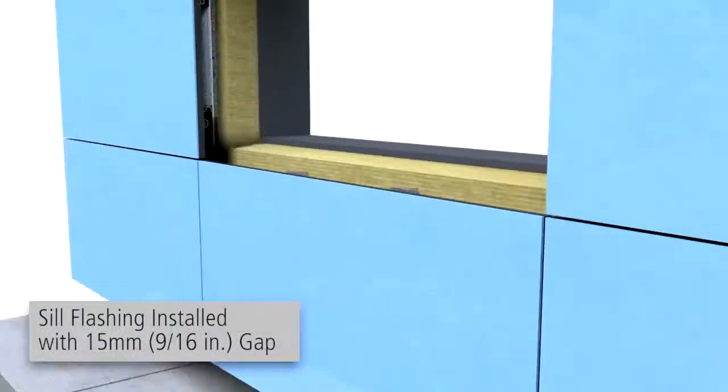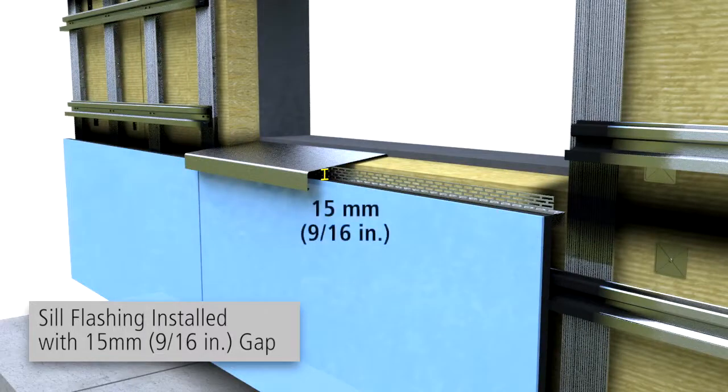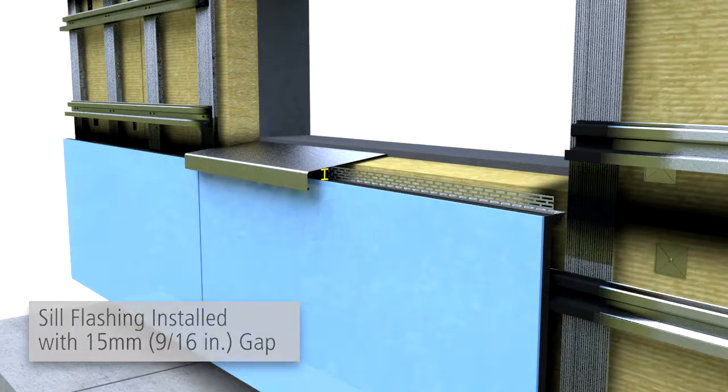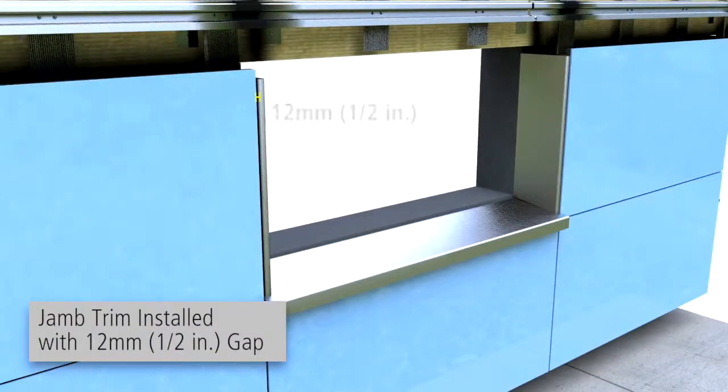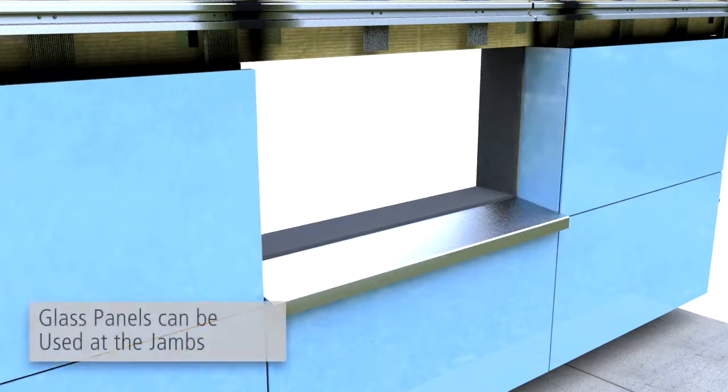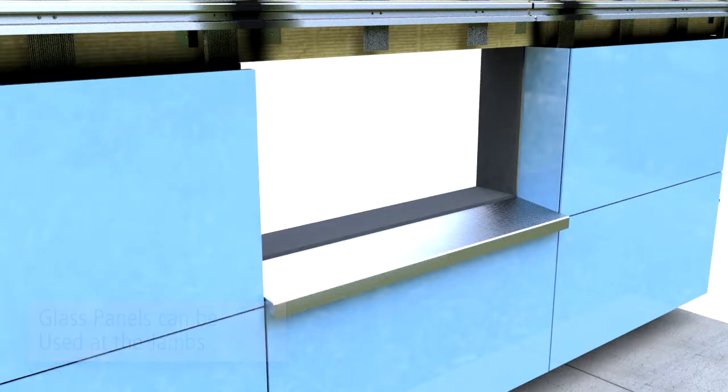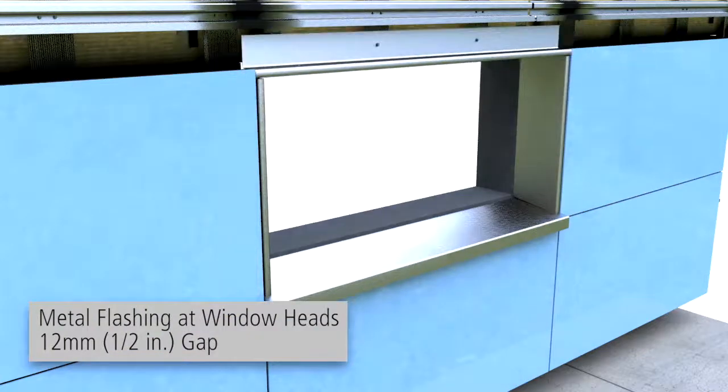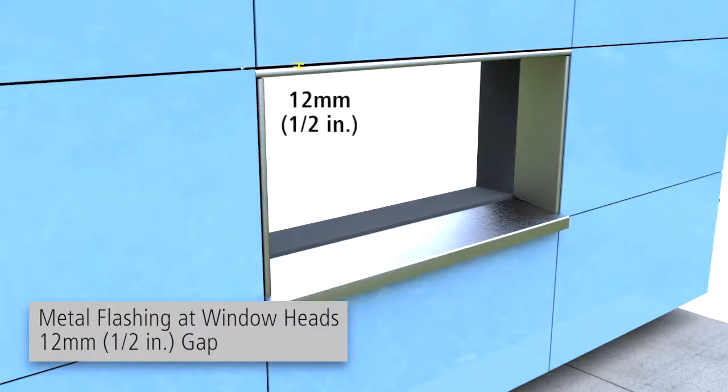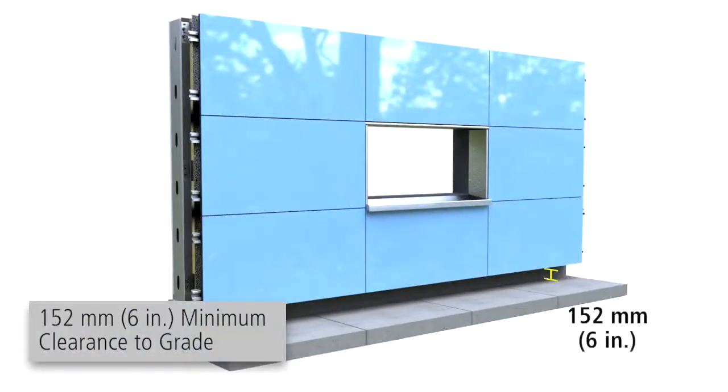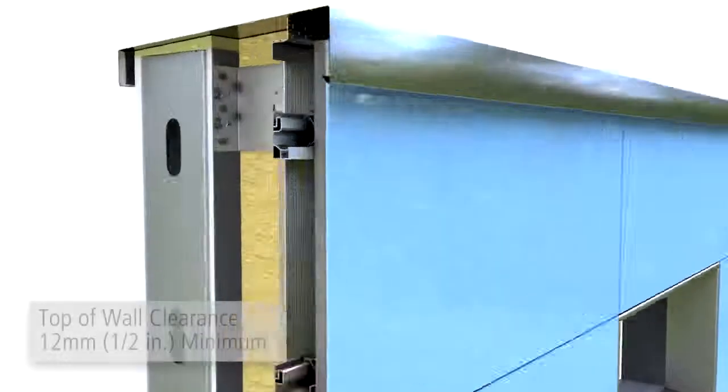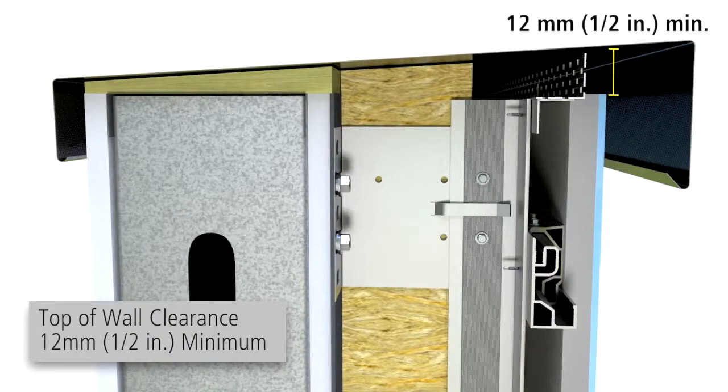At window sills, install metal flashing with a minimum 9/16 inch ventilation gap between sill flashing and glass panel. At window jams, install jam trim with a maximum 1 1/2 inch ventilation gap between the jam trim and the glass panel. Alternatively, a glass panel can be used at the jam. At window heads, install metal flashing with a maximum 1 1/2 inch ventilation gap between the head flashing and the glass panel. At grade, provide a minimum of 6 inches to the glass panel assembly. At the top of the system, provide a minimum 1 1/2 inch ventilation joint between parapet cap or ceiling and glass panel.